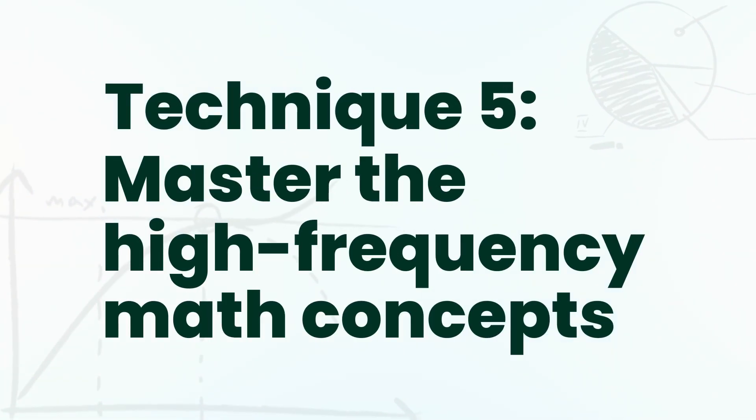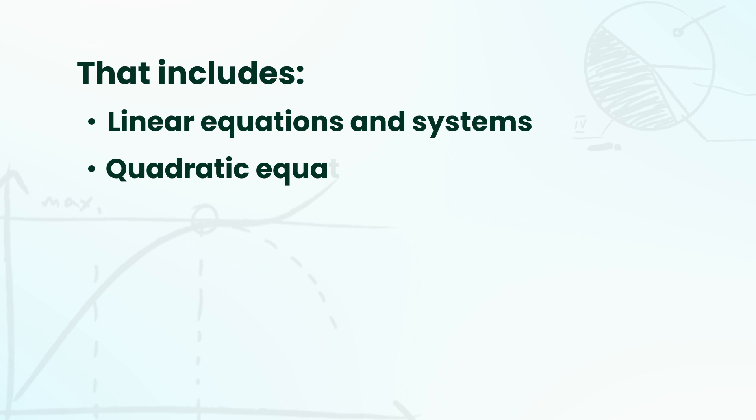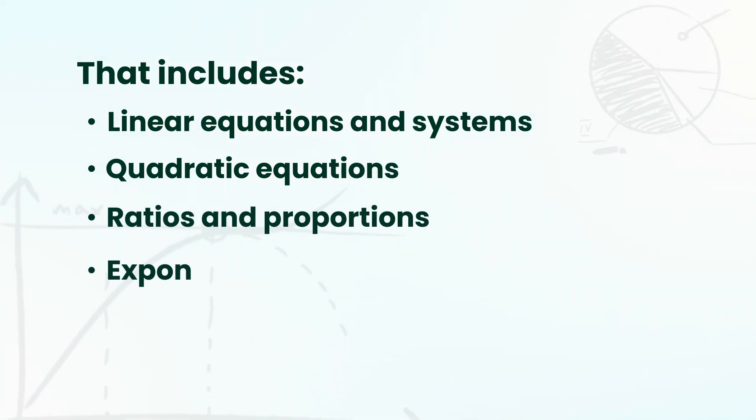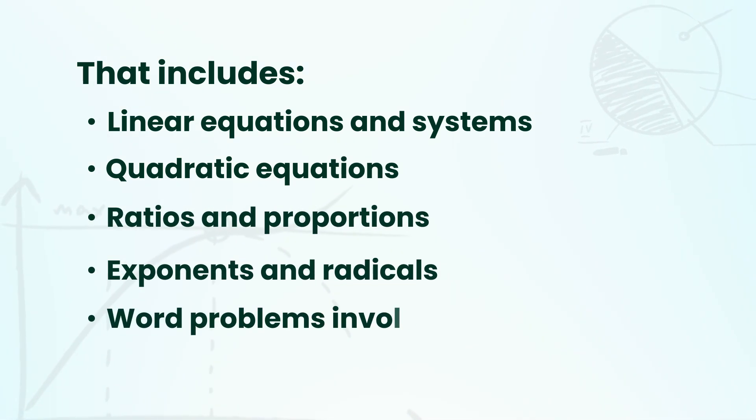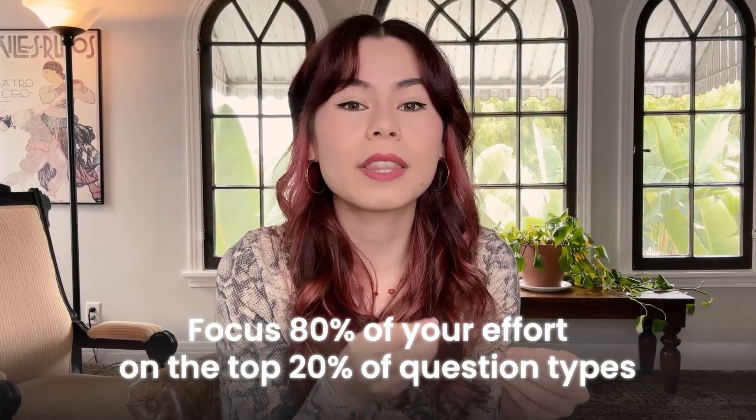Technique number five: master the high-frequency math concepts. The SAT doesn't test every math concept equally. Prioritize topics that appear most often: linear equations and systems, quadratic equations, ratios and proportions, exponents and radicals, and word problems including percent change and growth. Think of the 80-20 rule — focus 80% of your effort on the 20% of topics that will yield the most results.